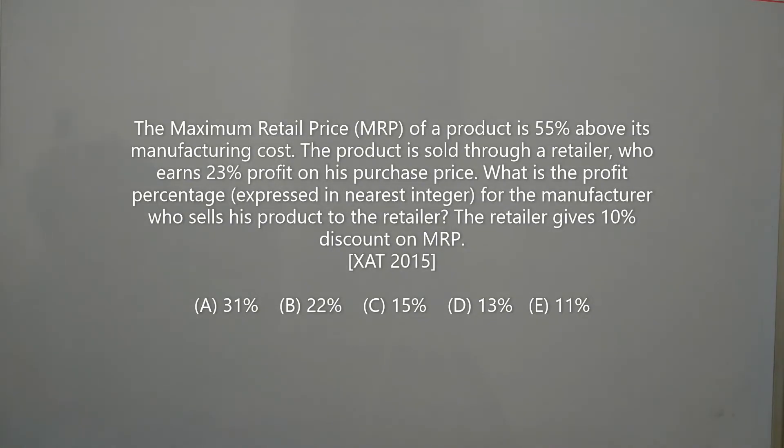The maximum retail price of a product is 55% above its manufacturing cost. The product is sold through a retailer who earns 23% profit on his purchase price. What is the profit percentage, expressed in nearest integer, for the manufacturer who sells his product to the retailer? The retailer gives 10% discount on MRP.